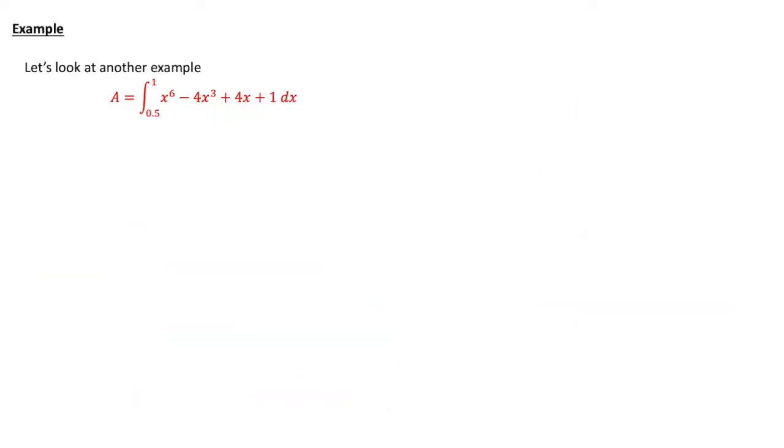Let's have another example, a little bit more nasty, quite a long and complicated polynomial there, and we're going between a half and 1 rather than 0 and 4. x to the 6 integrates to x to the 7 over 7, minus 4 times x cubed integrated is x to the 4 over 4, plus 4 times x integrated is x squared over 2, and plus 1 integrated is x.